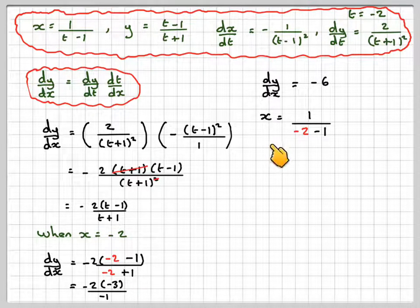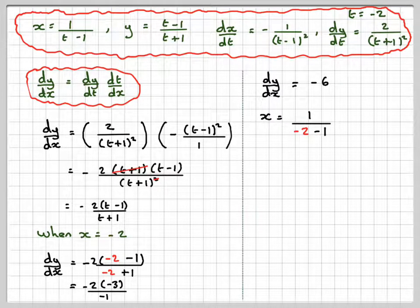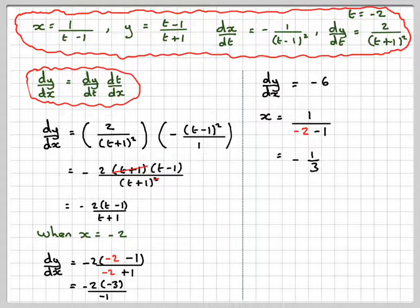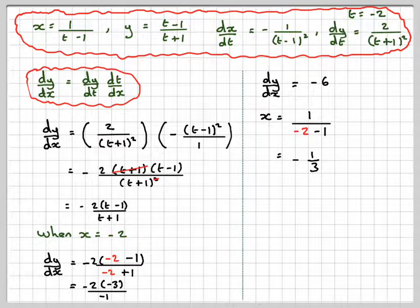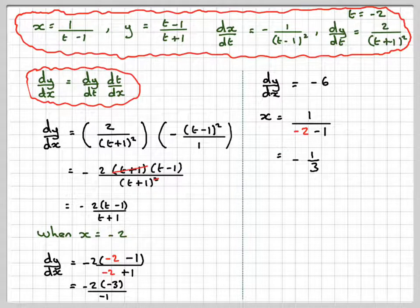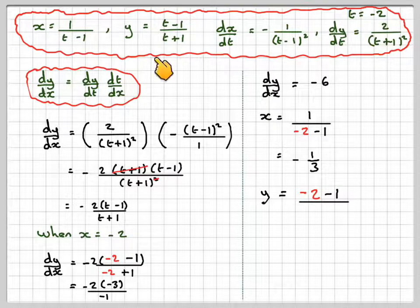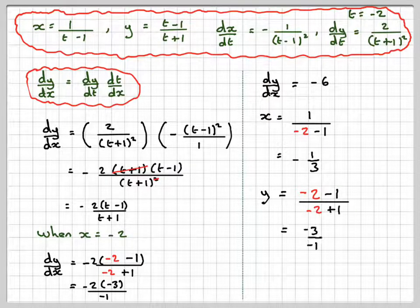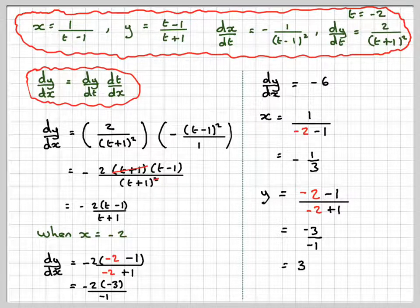Therefore, x is going to be 1 over minus 2 minus 1, which is going to be minus 1 over 3, because minus 2 minus 1 is minus 3. y is going to be minus 2 minus 1 over minus 2 plus 1, which is minus 3 over minus 1, which is 3.